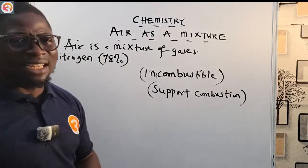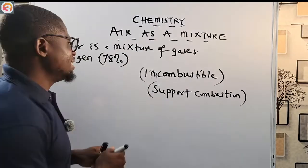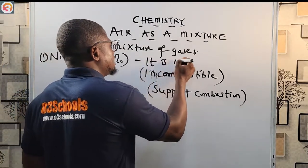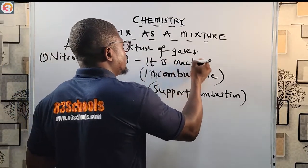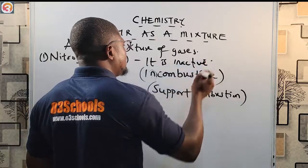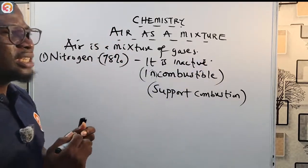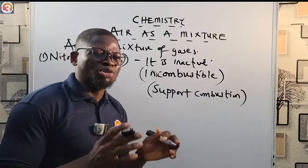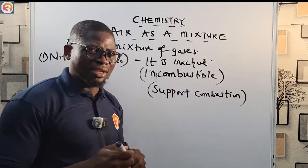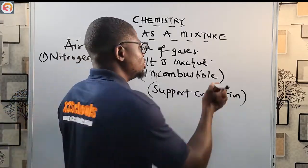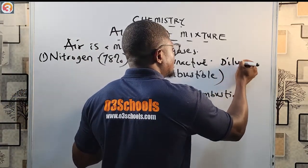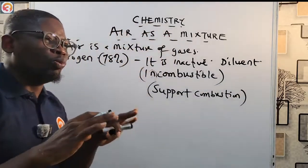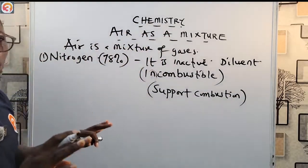Nitrogen is very, very inactive. It does not support combustion. It is inactive and is usually used as a diluent and to moderate combustion. Combustion means burning. So if you see airplane tires, they are pumped with nitrogen. The air they put into those tires is nitrogen, because when a plane is about to land, due to the weight and the tarmac, the ground impact may generate sparks.